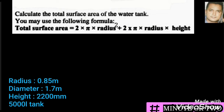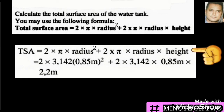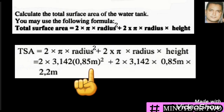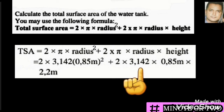Calculate the total surface area of the water tank using the given formula. All we need to do is substitute the given values into the formula. The value for pi is always 3.142. We've worked out our radius as 0.85 meters — remember the radius is squared, so put the value in brackets and square it. We then substitute the pi value and the radius value.